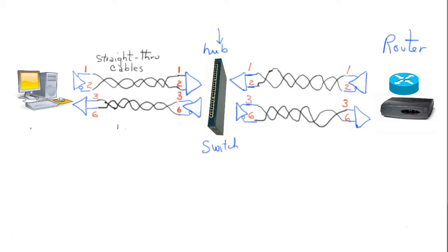Computers transmit on pins one and two and receive on three and six. A hub transmits on three and six and receives on one and two. With a straight-through cable, the transmitter on the computer at pins one and two is tied to one and two on the hub, which is its receiver — transmitter to receiver, exactly what we want. Similarly, the hub's transmitter on three and six connects to the computer's receiver. A hub connecting into a router works the same way, so everything can be connected with straight-through cables.